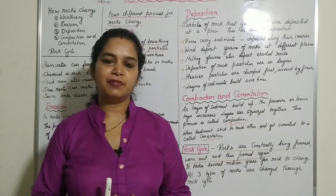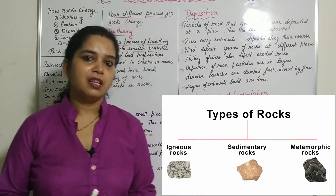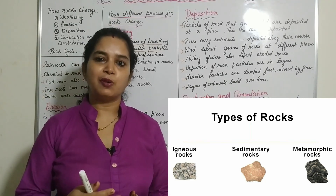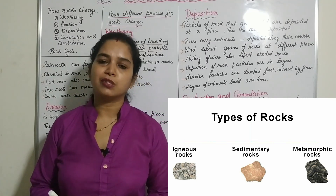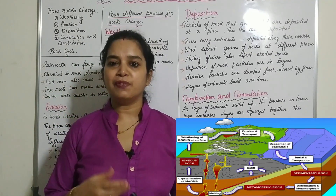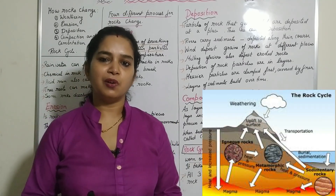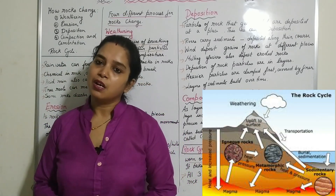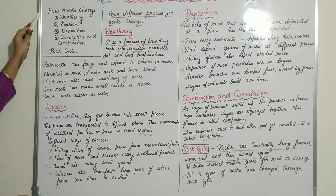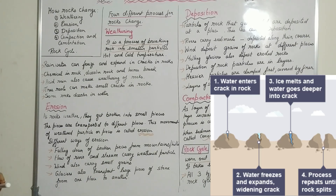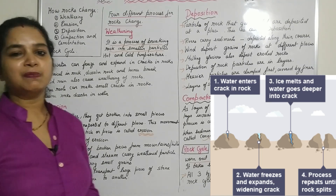Hello, dear students. In our last video we discussed about the types of rocks — igneous rocks, sedimentary rocks, and metamorphic rocks. Today we are going to discuss how rocks are formed, what the process of rock formation is, and also about the rock cycle. Rocks change through the following processes: weathering, erosion, deposition, compaction, and cementation. We are going to discuss each one by one.